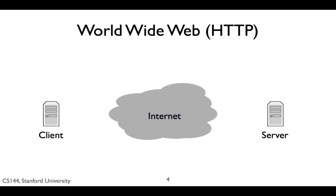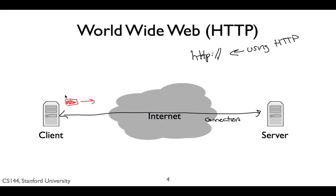Now that we've seen the basic way networked applications communicate, let's look at our first example: the World Wide Web. The World Wide Web uses something called HTTP, which stands for Hypertext Transfer Protocol. When you see "HTTP://" in your browser, that means it's communicating using HTTP. We'll dig much deeper into HTTP later in the course. For now, I'm just going to give a very high-level overview. In HTTP, a client opens a connection to a server and sends commands to it. The most common command is GET, which requests a page.